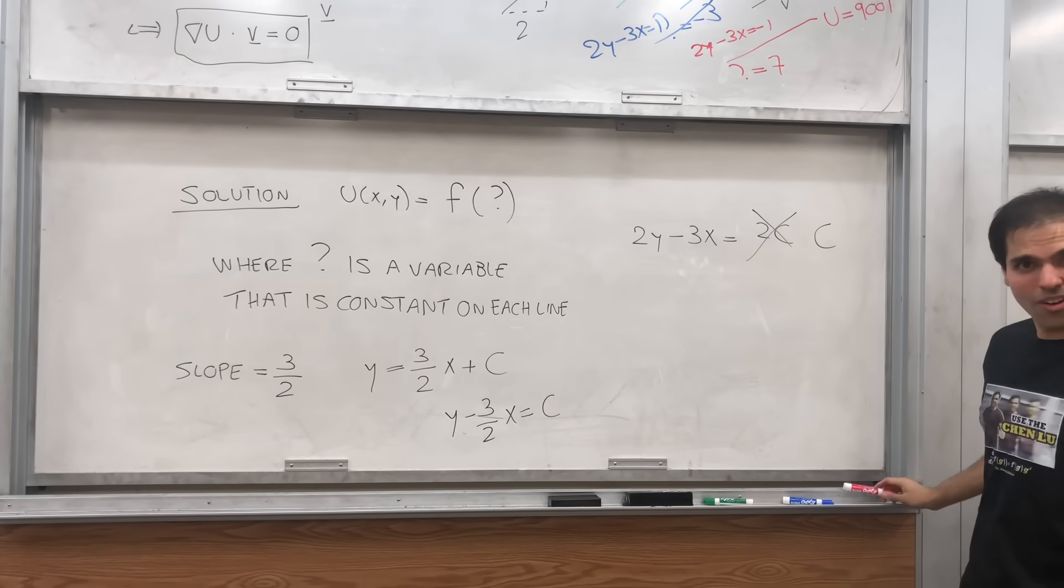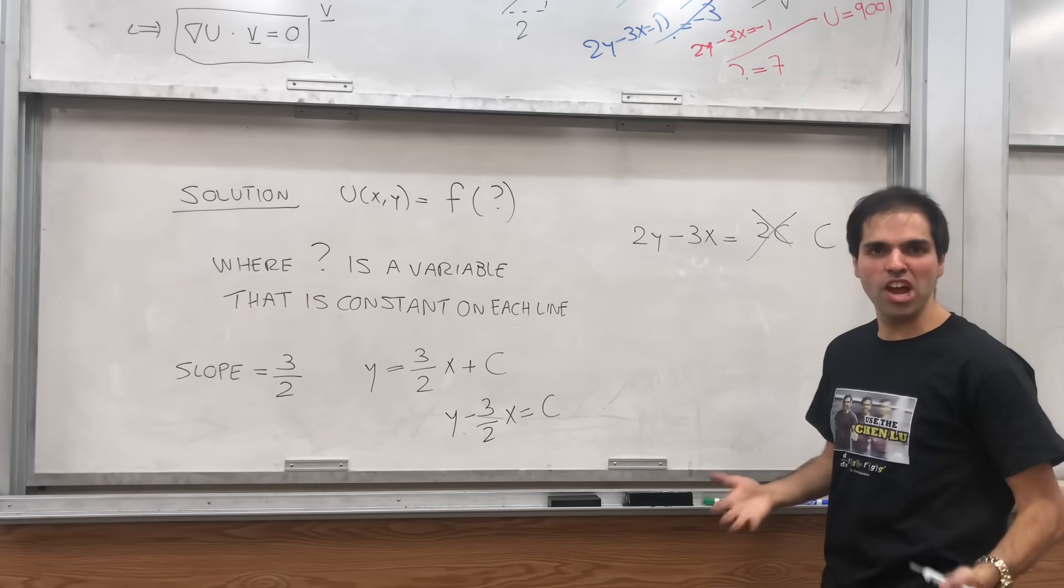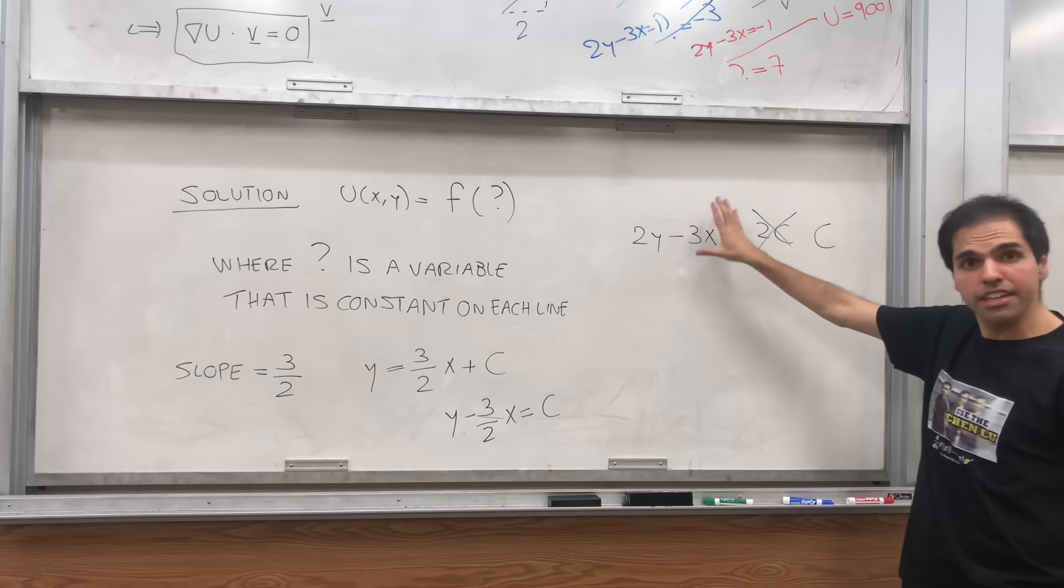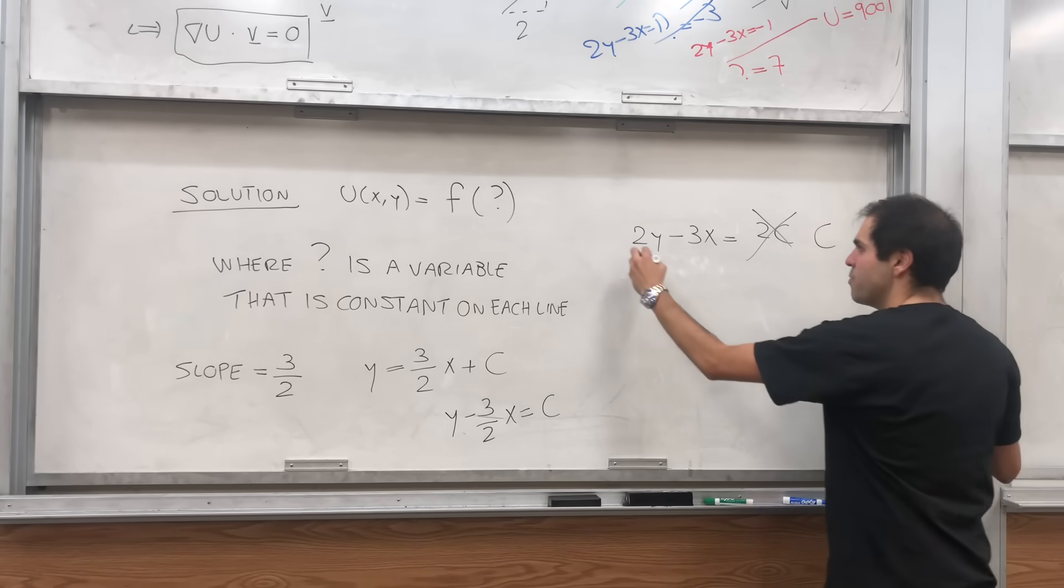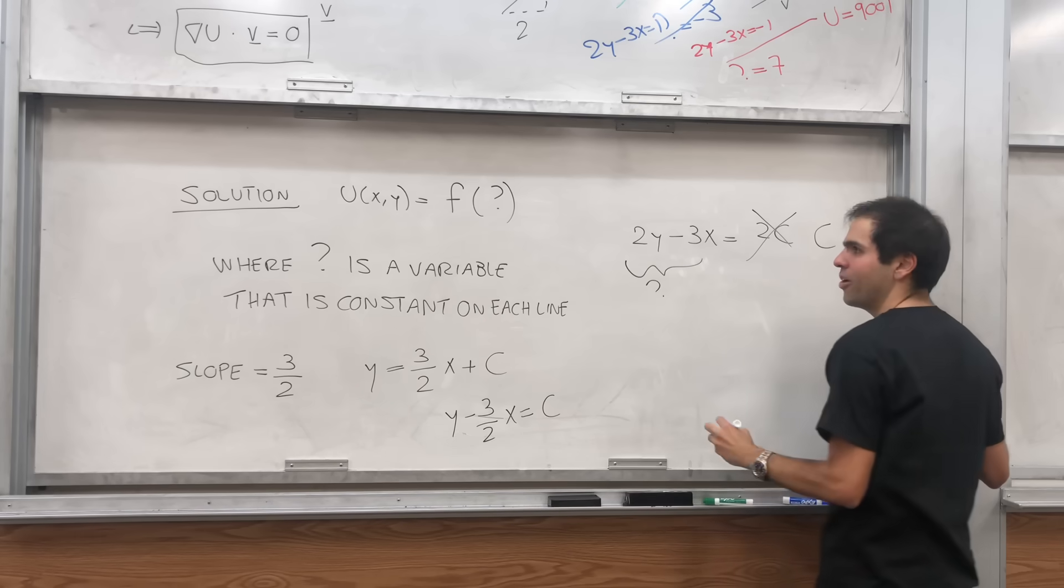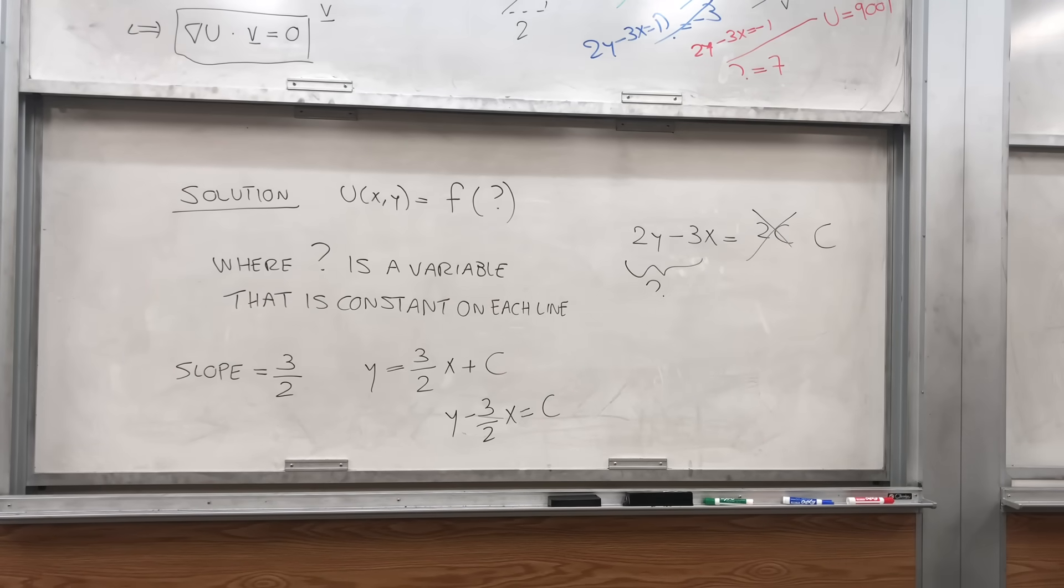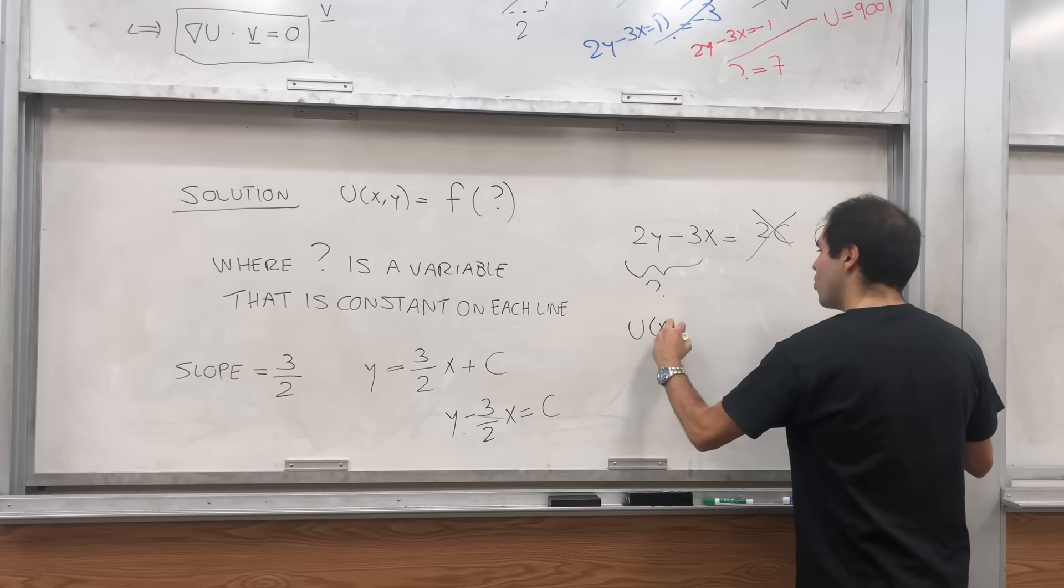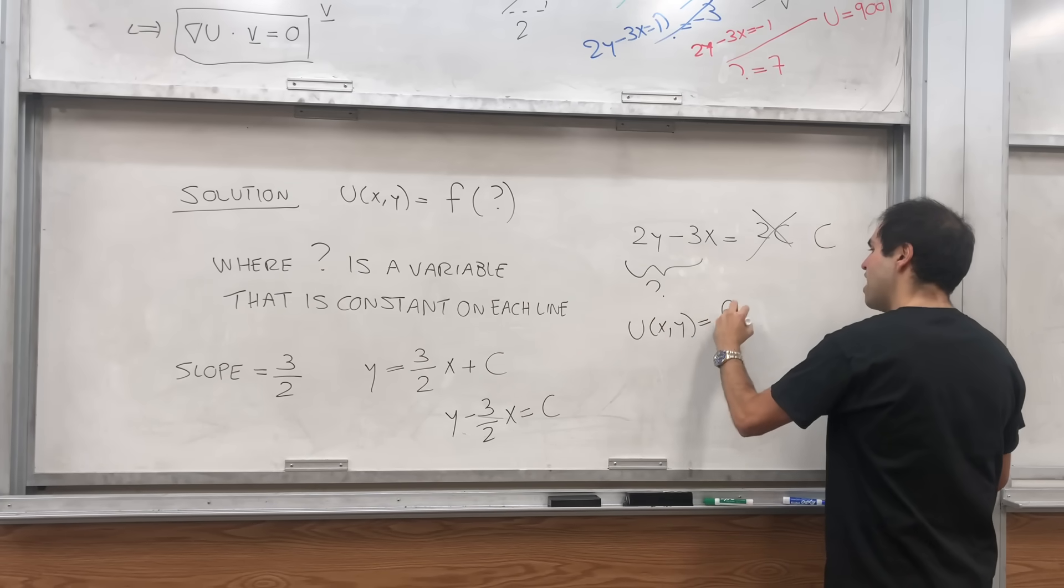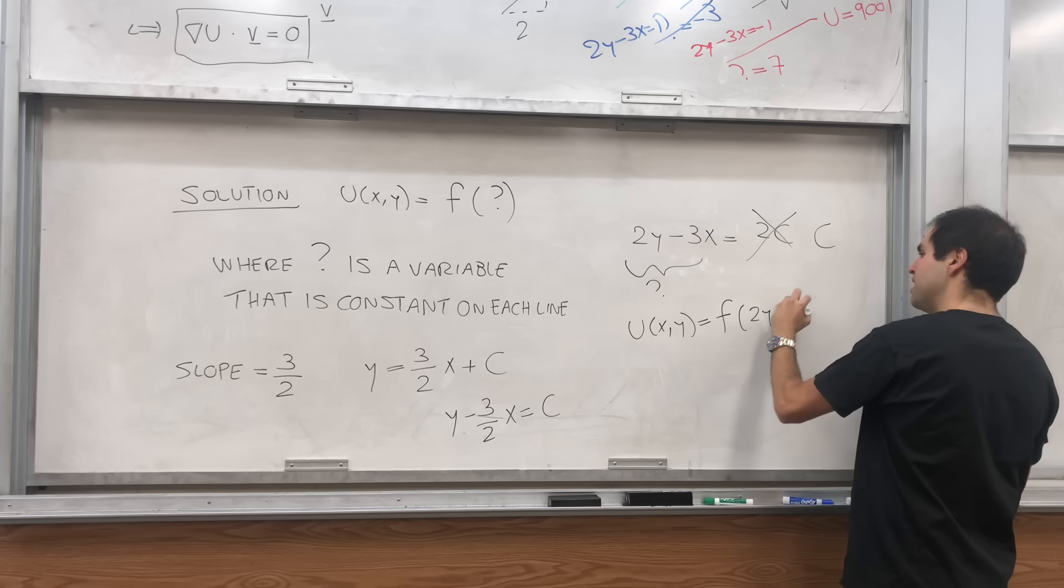Because our question was, can we find a variable that is constant on each line? Yes, indeed. This variable is 2y minus 3x. And in particular, this is question mark. And therefore, we actually get the solution of our PDE. We get u(x,y) equals f of 2y minus 3x.